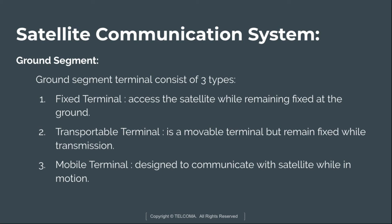The second is the transportable terminal, which is a movable terminal but remains fixed during transmission. An example is satellite news gathering, where a crew moves to a location, stops, deploys the antenna, and establishes a link to the satellite.